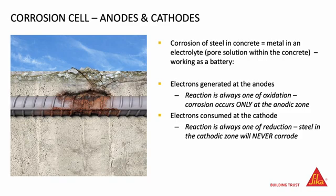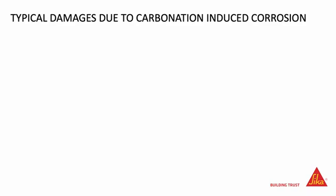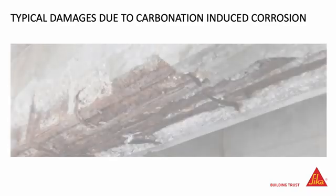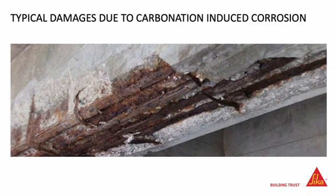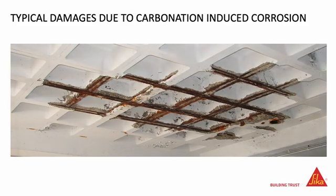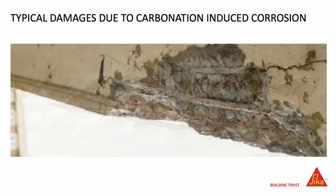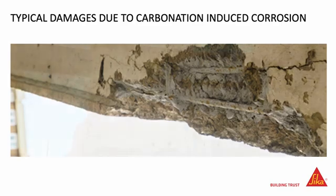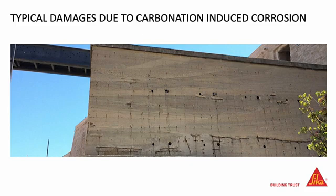The corrosion process in reinforced concrete is similar to the process in a car battery — corrosion occurs at the anodic zone and not at the cathodic zone. Here are a few examples of damage due to corrosion in various structures: buildings, bridge beams, car parks, etc. It can be noted that most structures presenting corrosion damage due to carbonation have very low concrete cover, as seen in the different photos presented. We can also see the overall uniform corrosion typical of carbonation-induced corrosion.